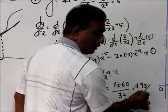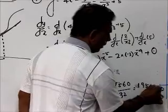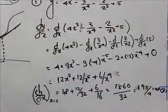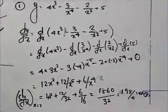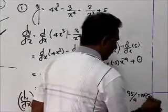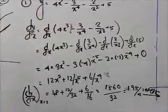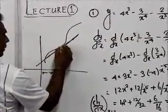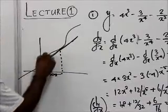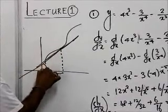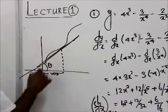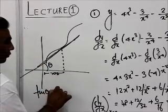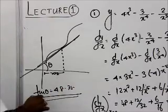So the result is 48.75. What is the meaning of this? If you draw the tangent at the point where x = 2 on the curve, and this tangent makes an angle θ with the horizontal, then tan θ = 48.75. That is the meaning.